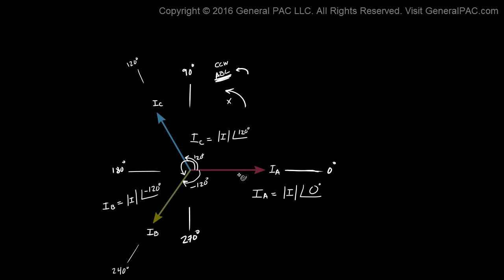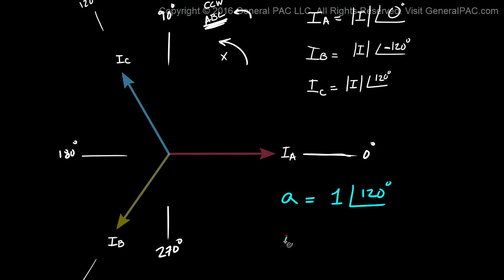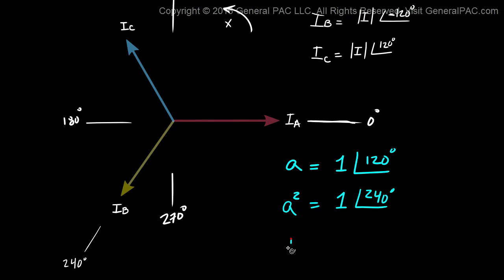Let me put these definitions here. We're going to define the A operator as the number 1 at 120 degrees. We're going to define the A superscript 2 operator as 1 at 240 degrees. And we're going to define the A superscript 3 operator as 1 at 360 degrees. It's important to note — don't get confused — A superscript 2 and A superscript 3 are not A squared or A cubed. The superscript 2 and 3 are just for indication purposes.